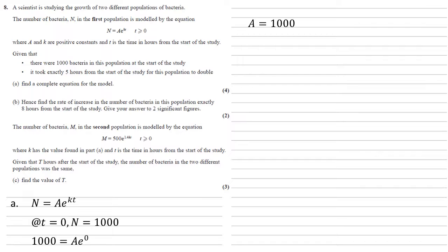Putting this into what we've got, we can now use that n equals 1000 e to the kt, and we're going to use our second fact, which is that it took exactly five hours from the start of the study for this population to double. So it started with 1000, it's going to end with 2000 on the fifth hour.